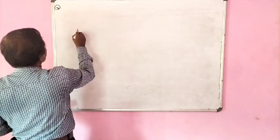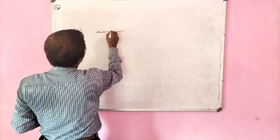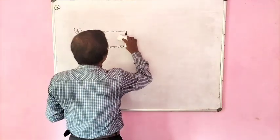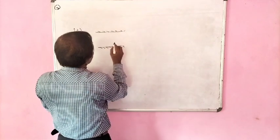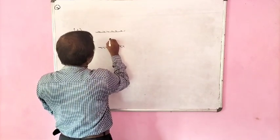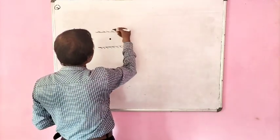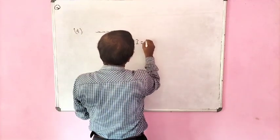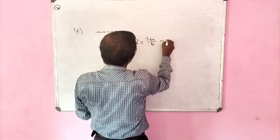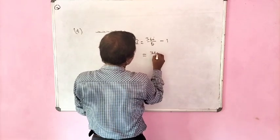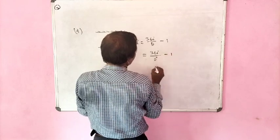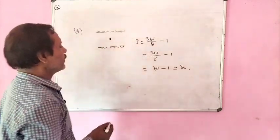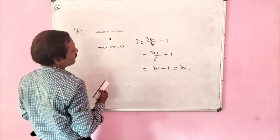Suppose two plane mirrors are parallel to each other — like in a saloon where you are seated in the middle with a mirror in front and a mirror behind you. How many images will be seen? Using i = 360/theta - 1, the angle is 0 degrees, so 360/0 - 1 = infinity - 1 = infinity. Total number of images formed will be infinity.